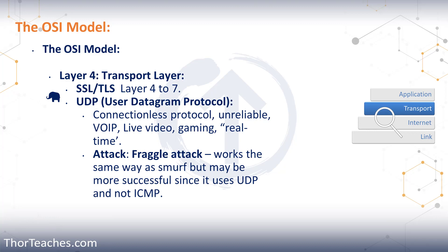UDP is connectionless — it just sends the traffic and doesn't really care if it gets there. TCP is connection oriented and the data is reassembled at the destination. It's pretty common to use a hybrid model where some things can be sent in TCP and others in UDP.